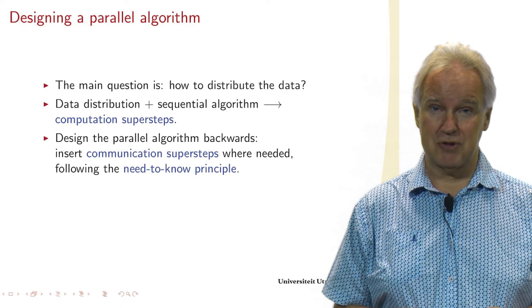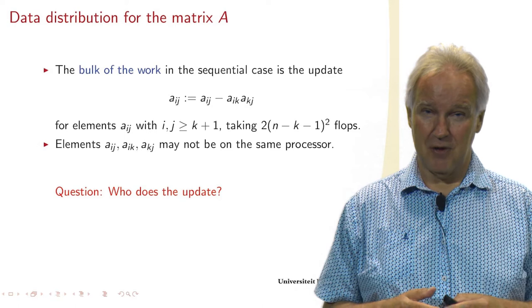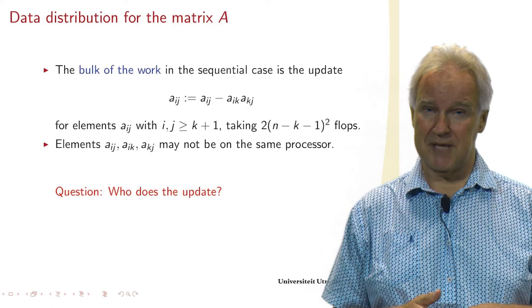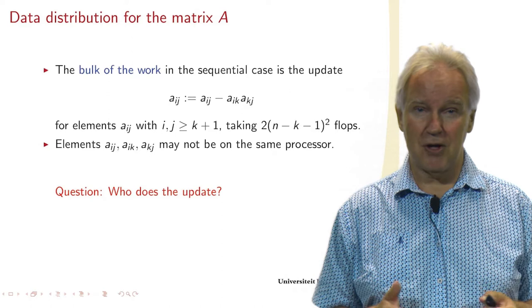The bulk of the computations is the update of a matrix element. Matrix element AIJ we subtract from it an element AIK times AKJ, and we do this for all matrix elements IJ larger than K.